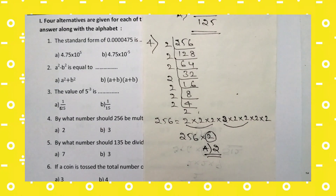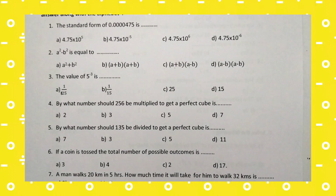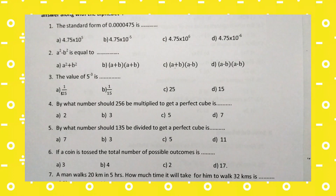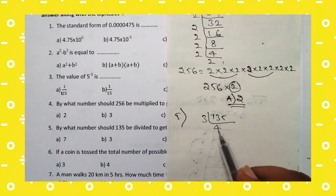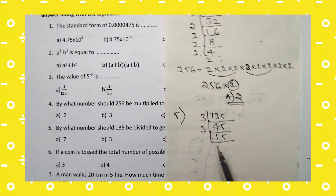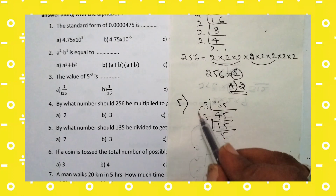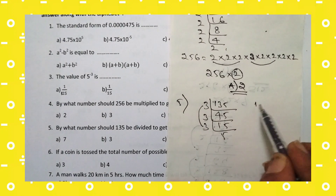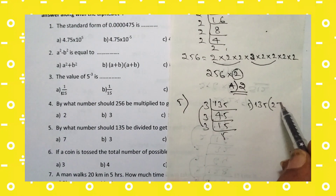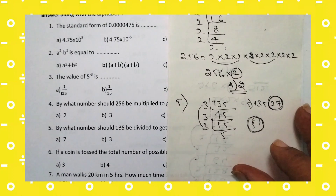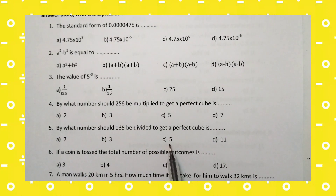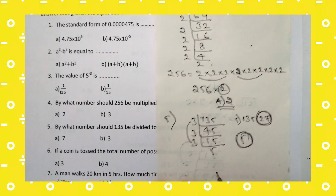Fifth question: by what number should 135 be divided to get a perfect cube? Dividing 135: 135 = 3 × 3 × 3 × 5. We get one triplet of 3s, with 5 left over. So 135 should be divided by 5 to get a perfect cube. For the fifth question, the right answer is option C: 5.